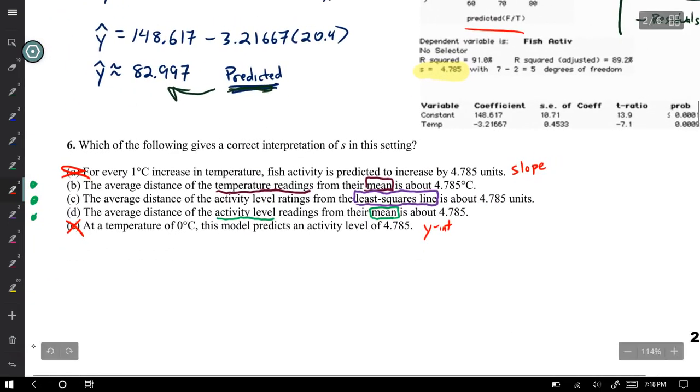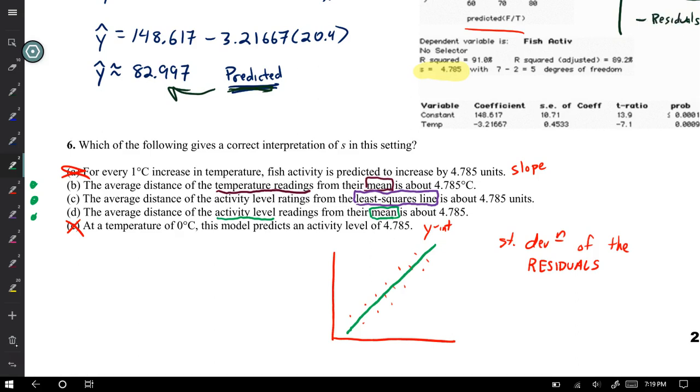B uses mean, C uses least squares line. So there's a difference between them. I can come back and analyze the difference more. So it's either B or C. The average distance of the activity level readings from their mean is about 4.785.